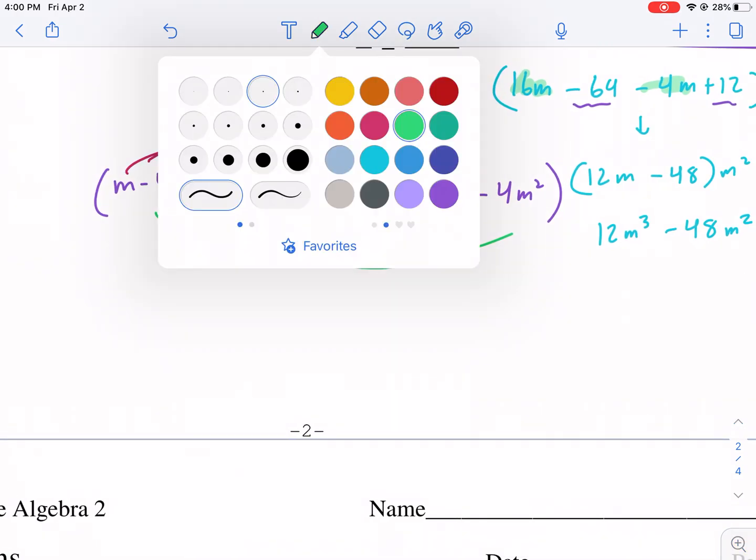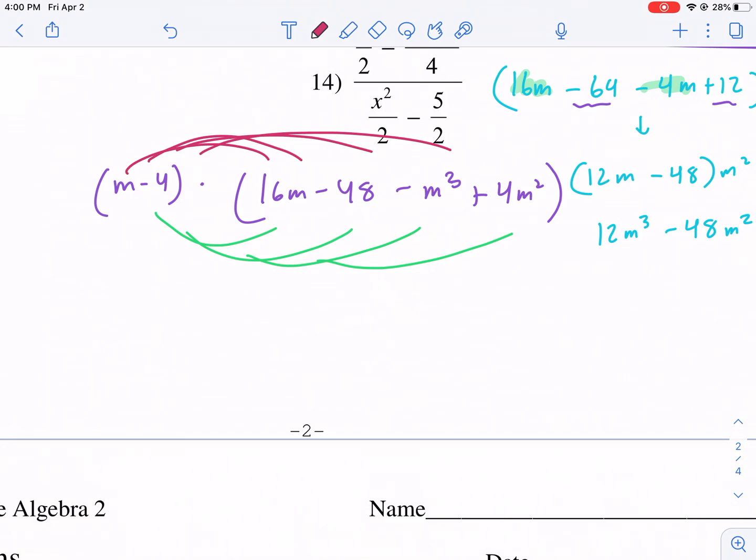So I have to do m times all those, and then I have to do this negative 4 times all of these, and then combine like terms. So I'm getting into the last page. I'm going to move this over. A lot to handle here. So let's do the pink first. I'm going to get 16m squared minus 48m. I'm just adding an m to all these minus m to the fourth plus 4m cubed.